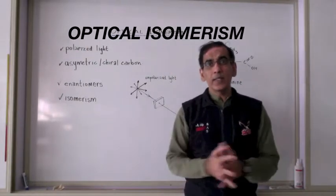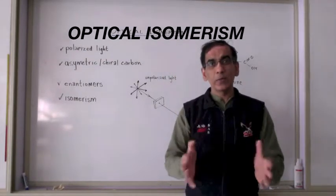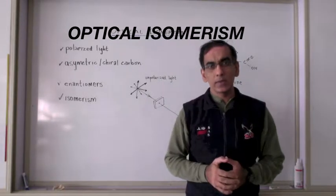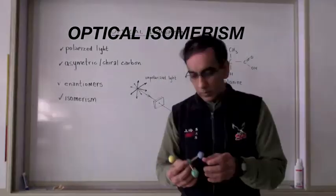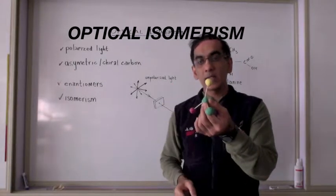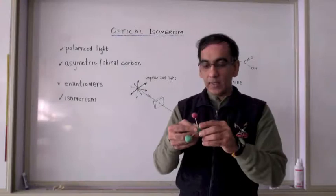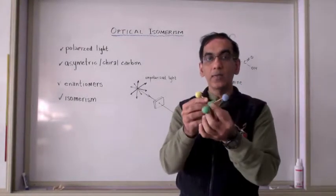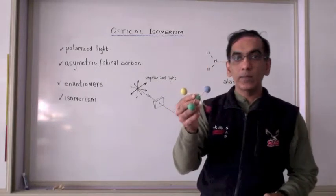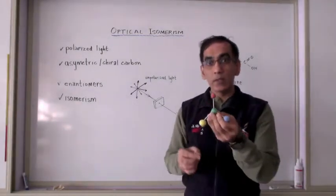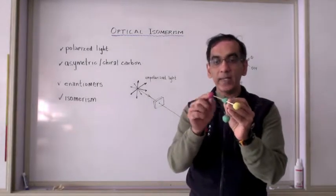Welcome again. Before we can talk about optical isomerism today, I would like you to gather some materials and build a model. You would need to get eight sticks or toothpicks like these and at least four, if not five, different colors of modeling clay or plasticine or any material that you can find to build these ball and stick models.